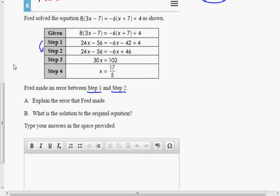Explain the error that Fred made, and then for part B, what is the solution to the original equation? Well, what I see going from those two steps, I see the mistake right here. And that is you've got a minus 42 plus 4.